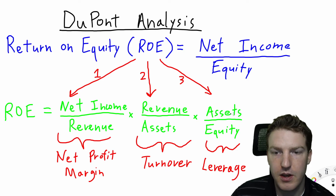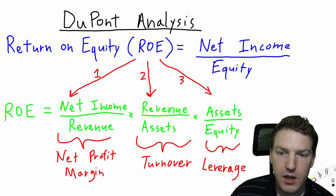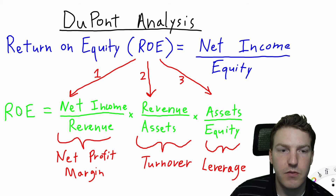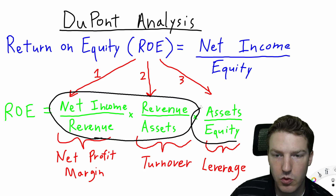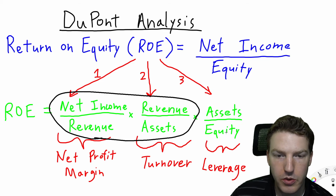The last component, financial leverage, is just the total assets of the company divided by the total equity. This will amplify the ROE — if it's positive, it will increase the ROE. If the first two components multiplied together are positive, then financial leverage will further increase the ROE. However, if those two components multiplied together are negative, this will decrease the ROE.